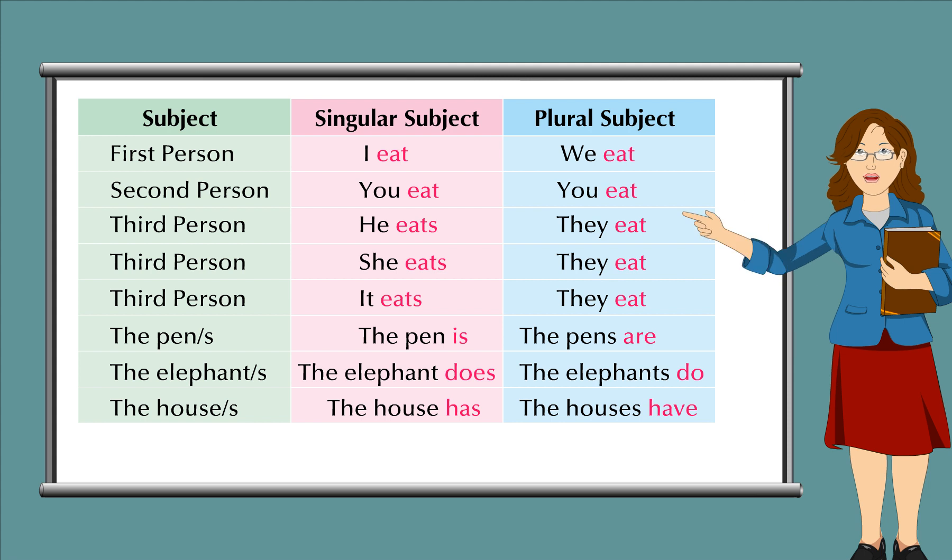The pen or pens: the pen is, the pens are. The elephant, the elephants: the elephant does, the elephants do. The house, the houses: the house has, the houses have.